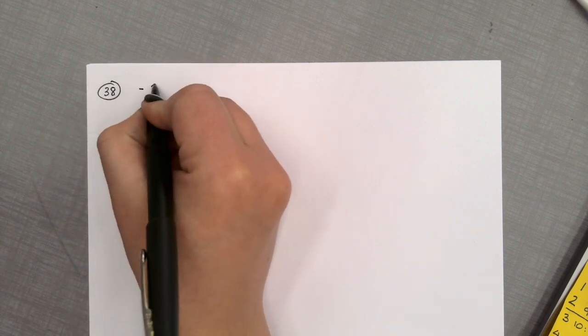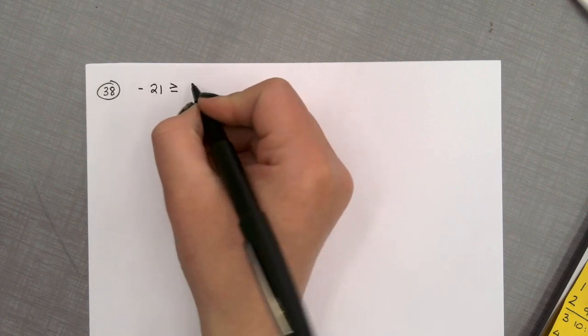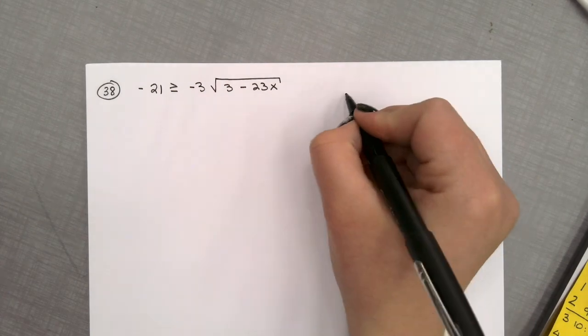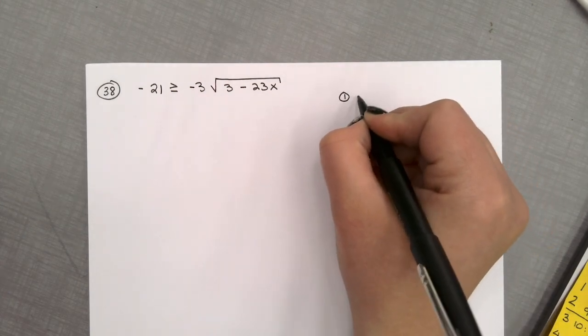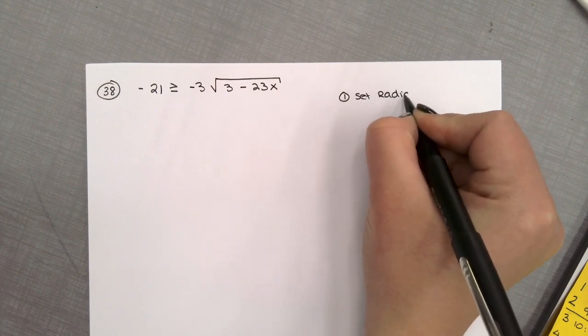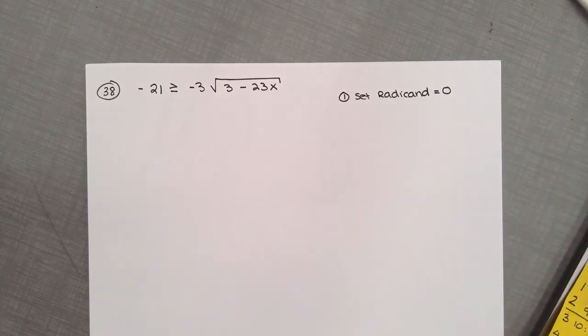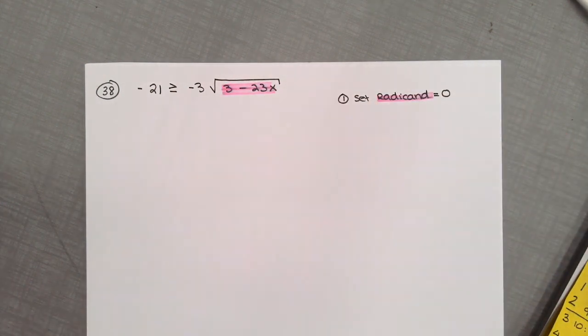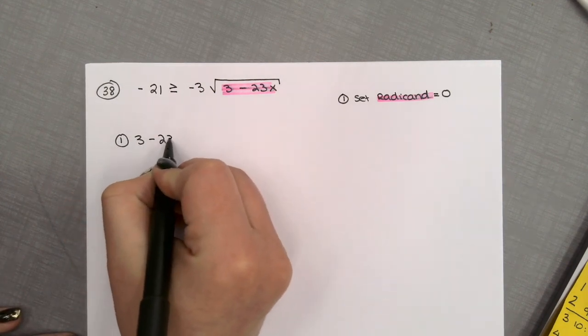Let's move on to the next section: solving inequalities. For question number 38, notice we are moving from equations to inequalities. We have: negative 21 is greater than or equal to negative 3 times the square root of 3 minus 23x. Step 1: take the radicand — the inside of your radical — and set it equal to 0. So 3 minus 23x equals 0.